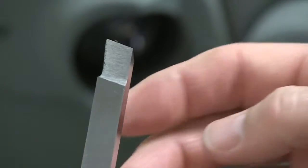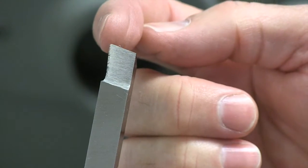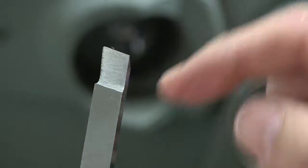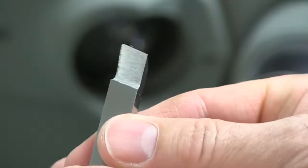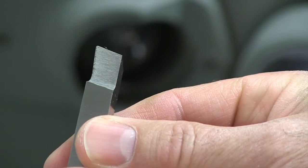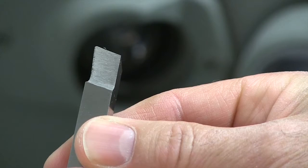So here's our tool bit. And as we've seen on the optical comparator, we have put a nice radius on this side. And of course, this is the top. And when we machine, we'd machine in this direction. And that's how we grind a high speed steel tool bit.